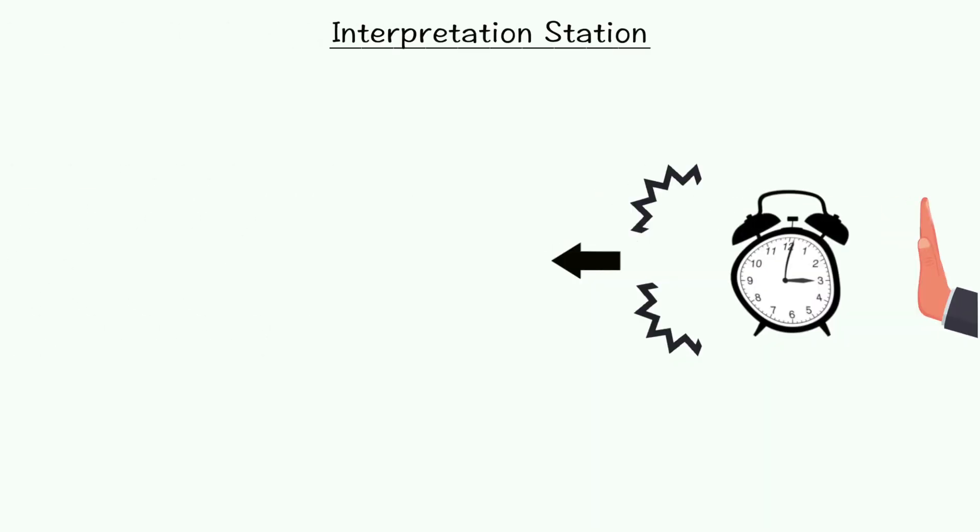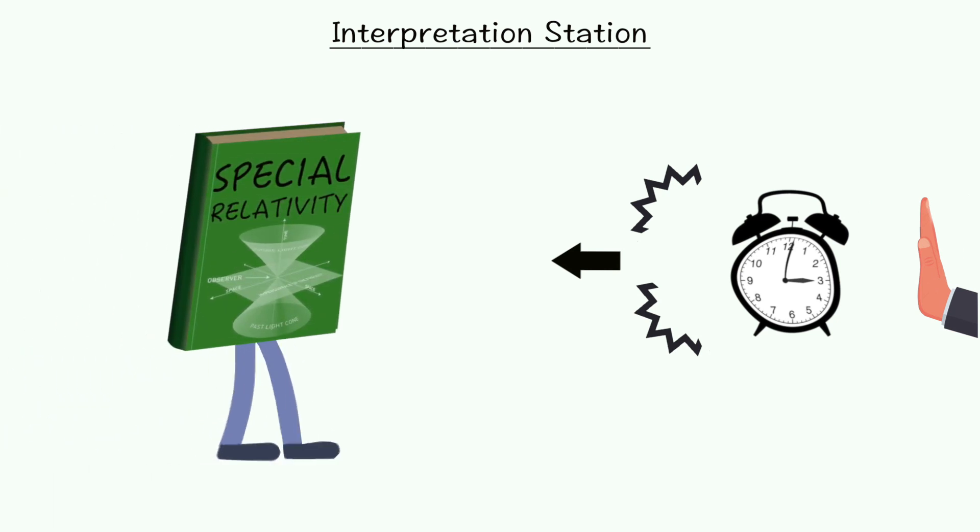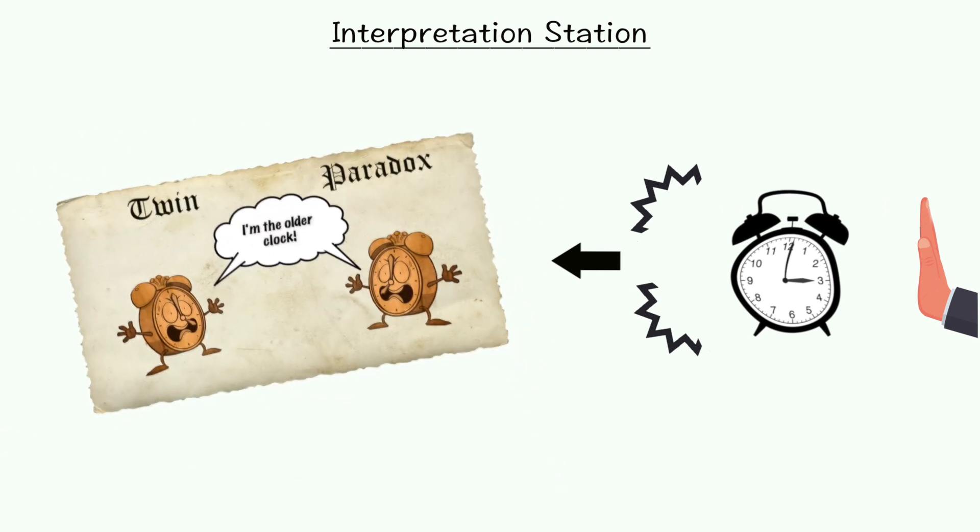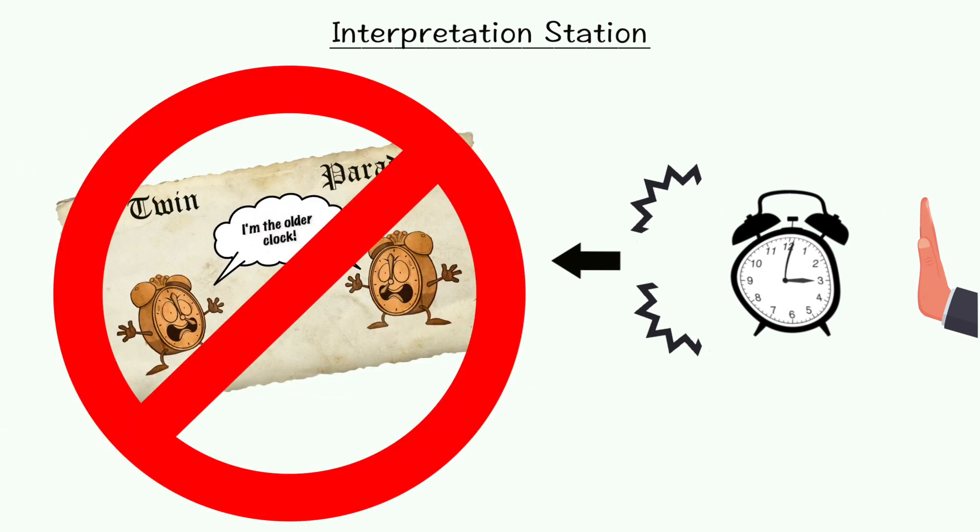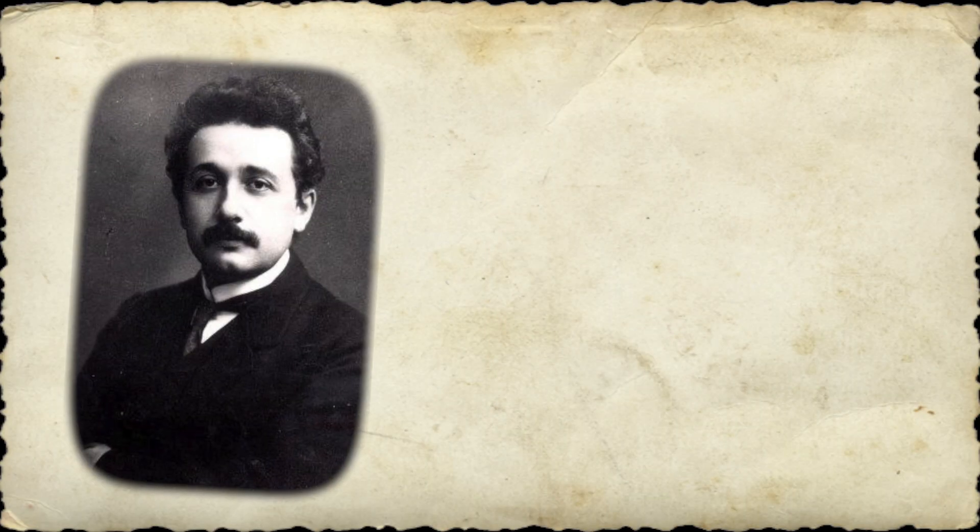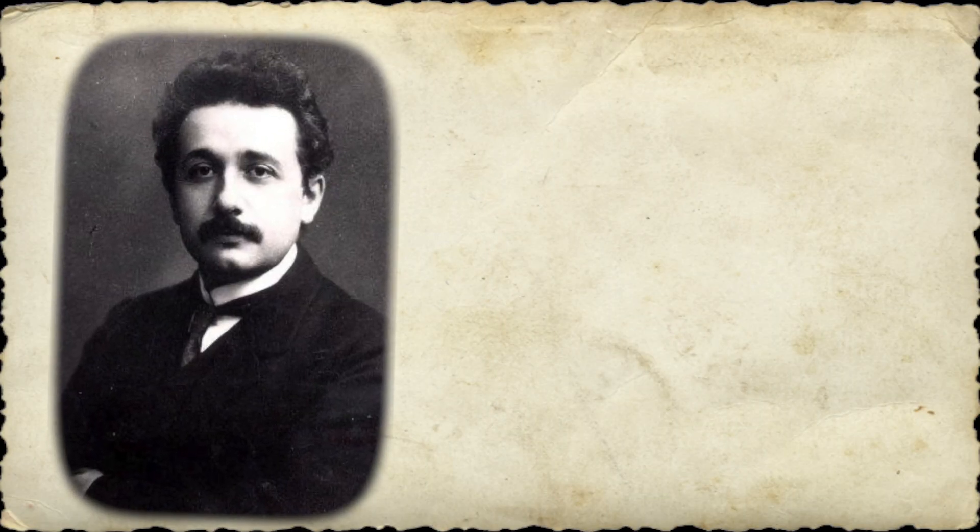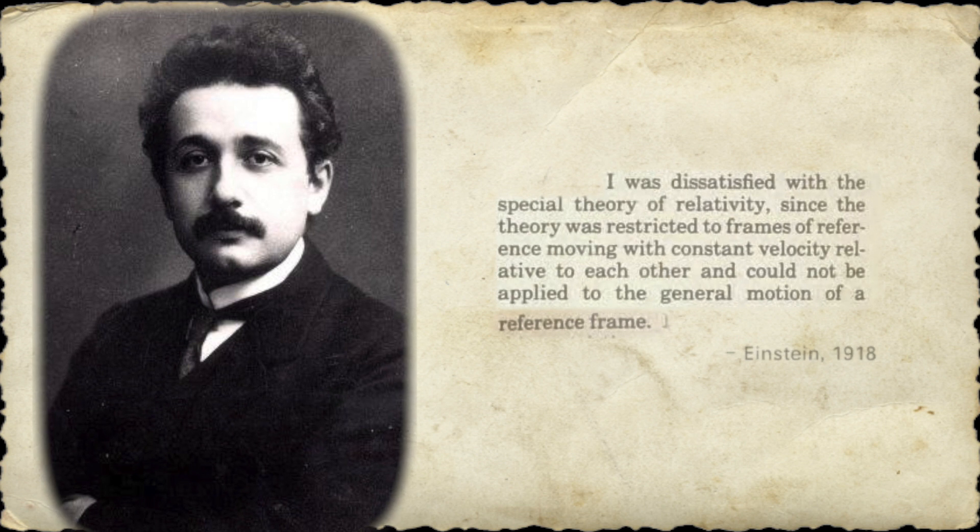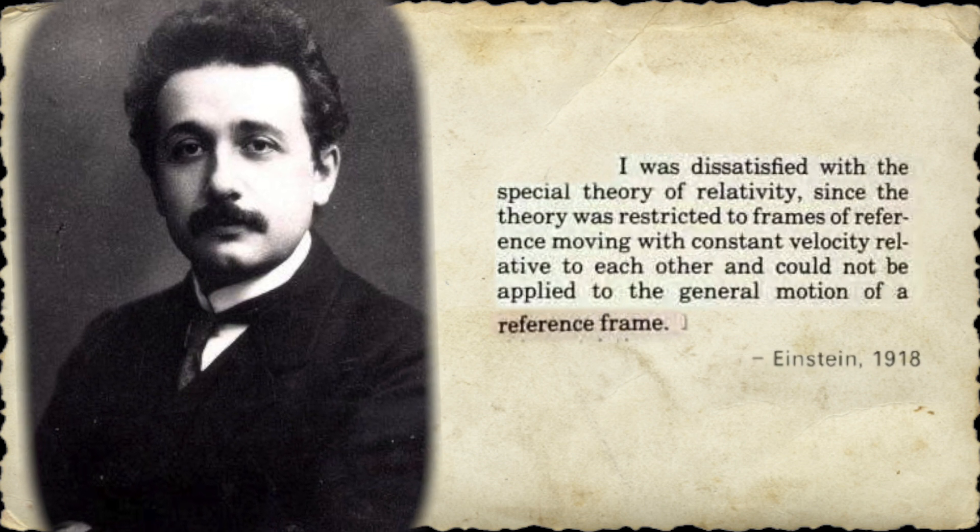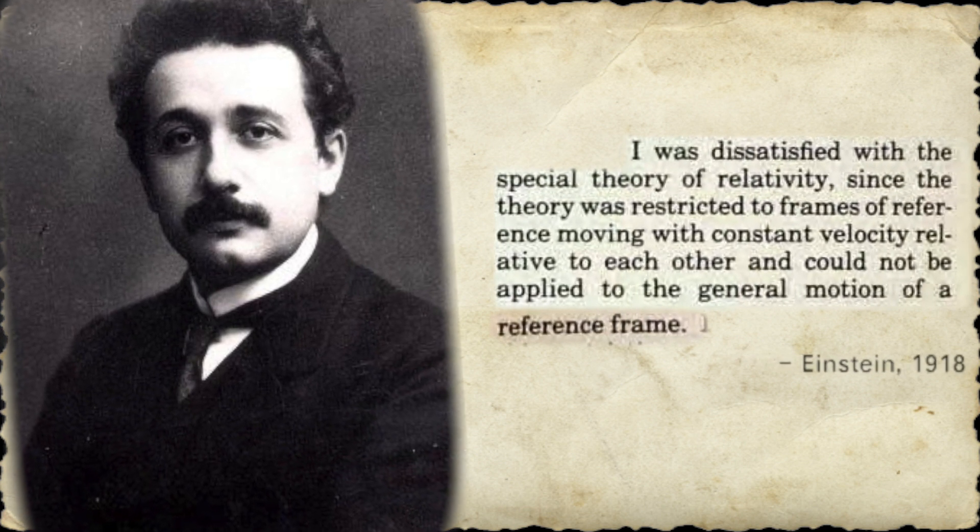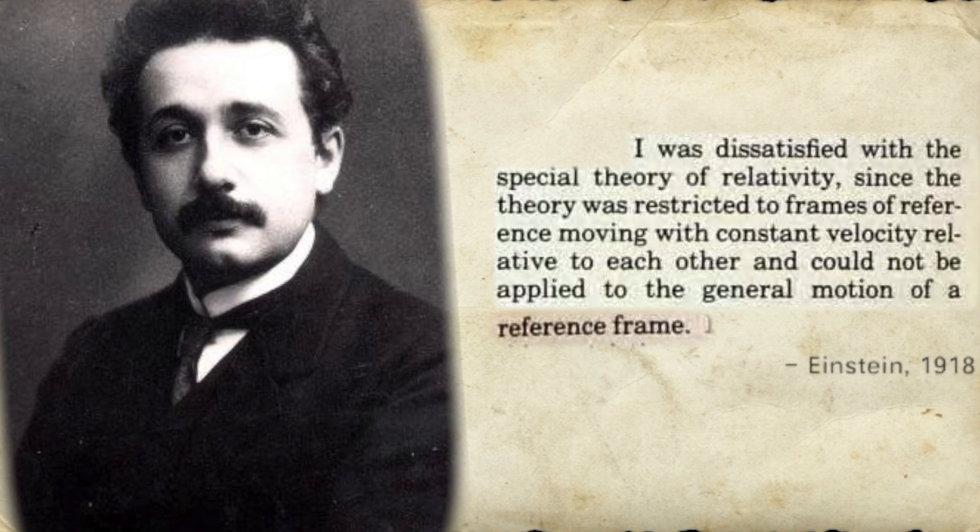By change in direction or jolt, Einstein means acceleration. Essentially, he is saying that special relativity cannot handle acceleration, so contradictions like the Twin Paradox are outside its scope. This wasn't a spur-of-the-moment defense. Rather, it was a claim Einstein truly believed and which he repeated multiple times over the years. What's strange is that this claim is most definitely wrong.